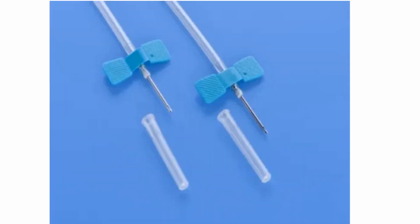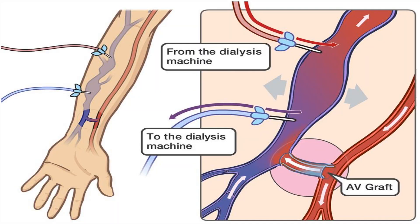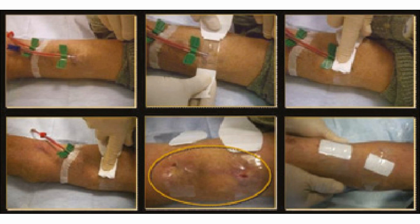The blood flow rate should be greater than 350 milliliters per minute. The first needle, known as the arterial needle, leads to the dialyzer, or artificial kidney. The second needle, known as the venous needle, is placed downstream and is used for the outflow. Once dialysis is complete, the needles are removed. Pressure is applied to the area for 10 minutes, or longer if anticoagulation was used. Finally, bandages are applied to the area.